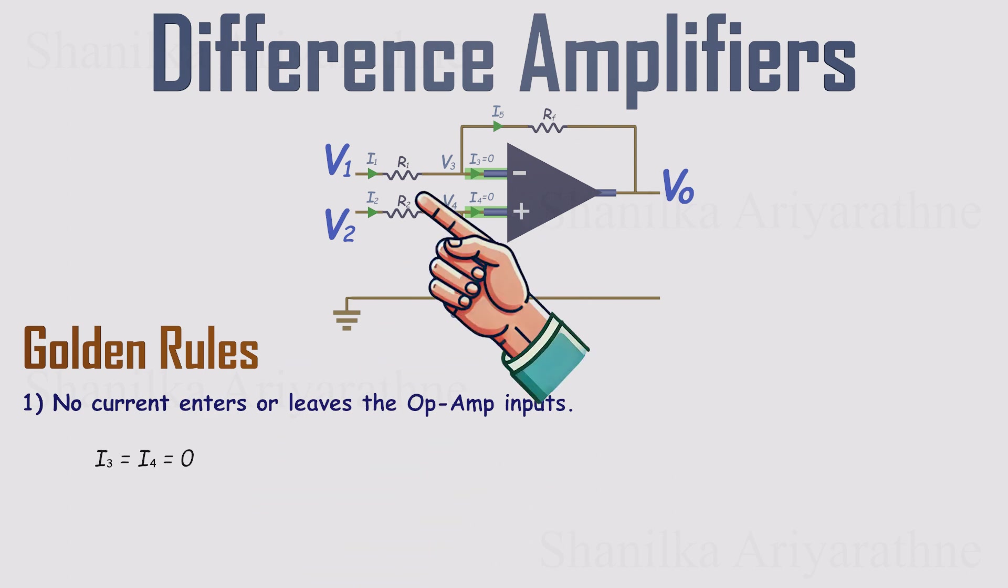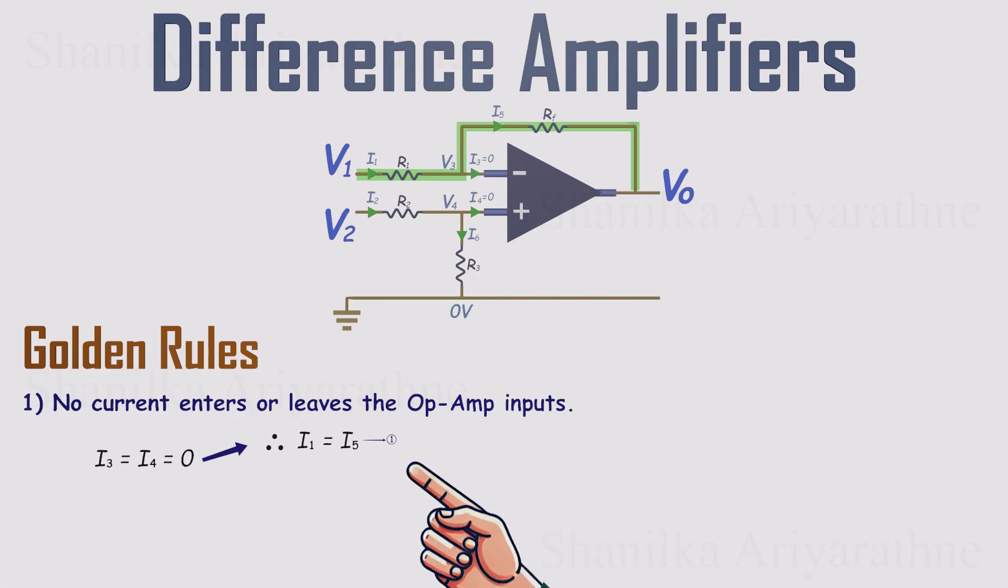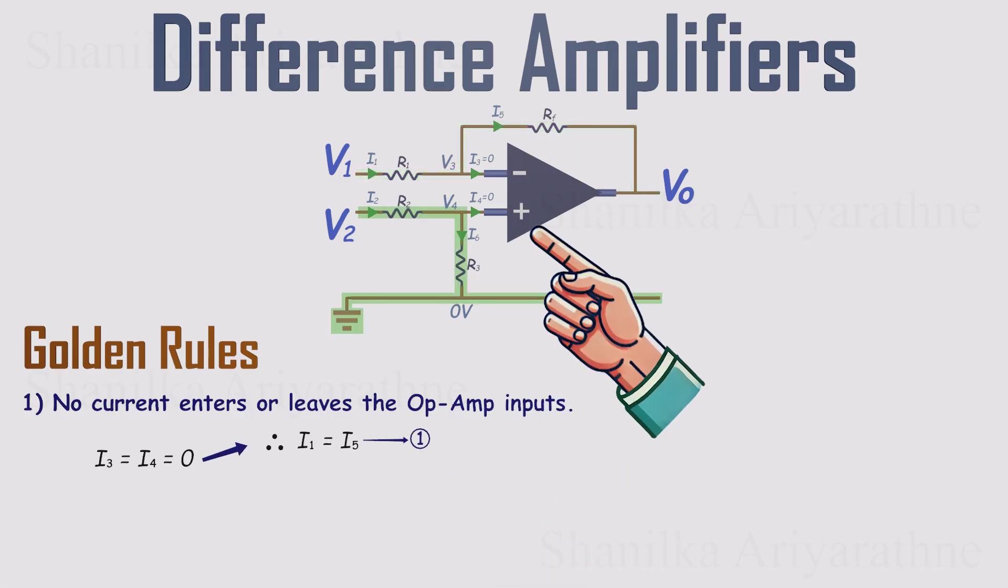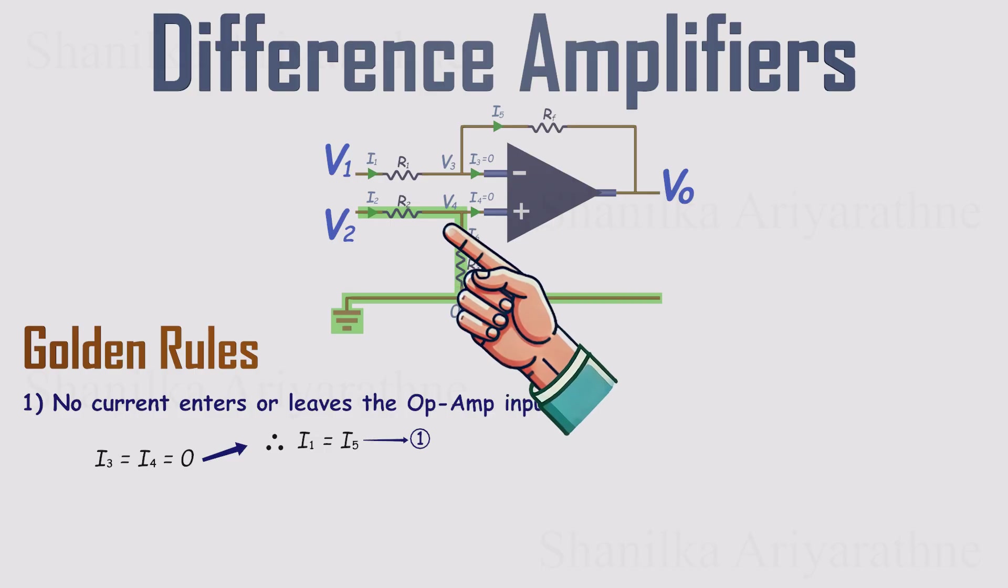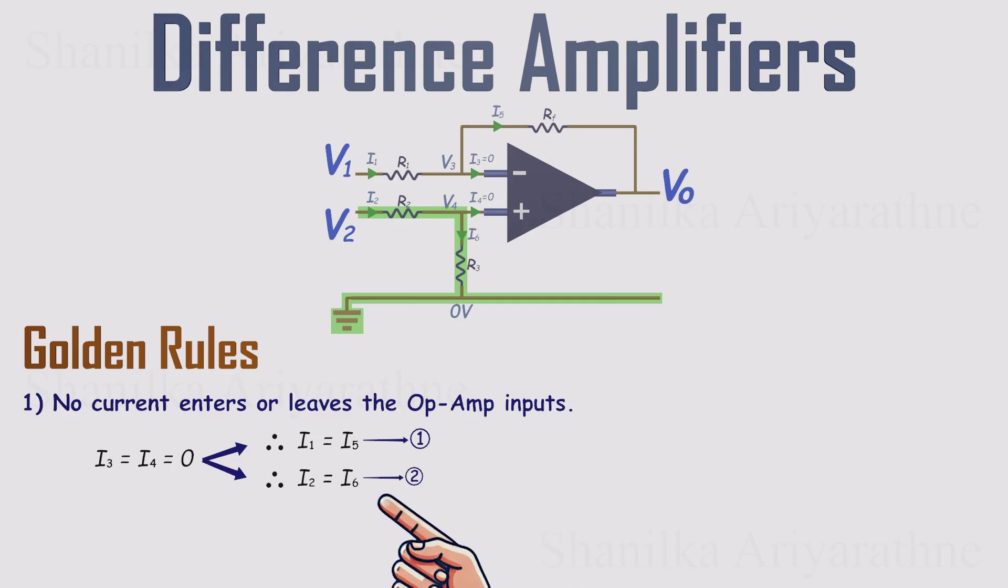So, the current coming through resistor R1 has nowhere else to go. It must flow through the feedback path RF. That gives us our first equation. I1 equals I5. On the non-inverting side, the current through resistor R3 also has nowhere else to go except down through the resistor to ground. So I2 equals I6. That's our second equation.